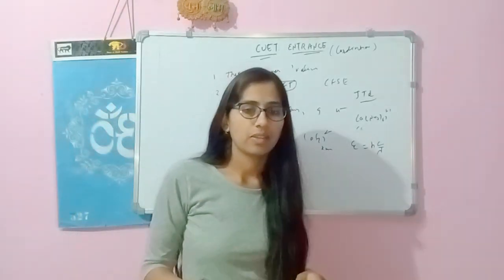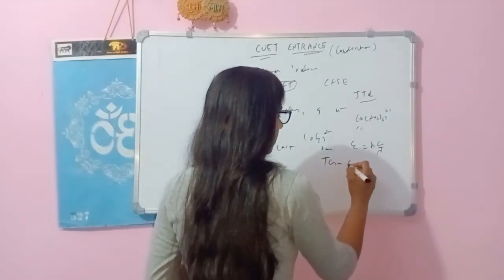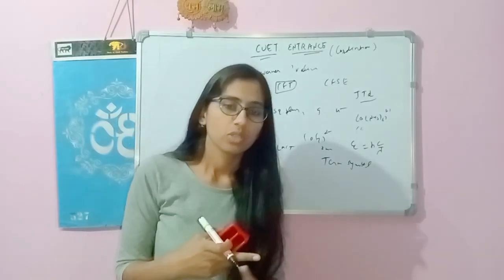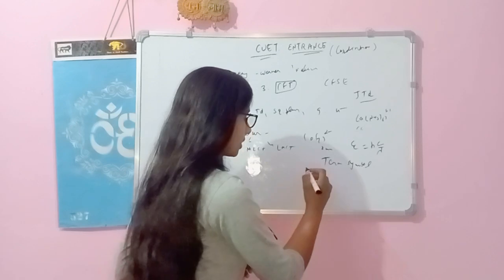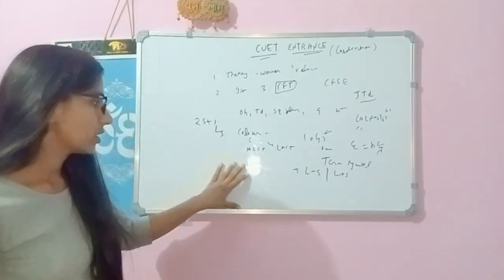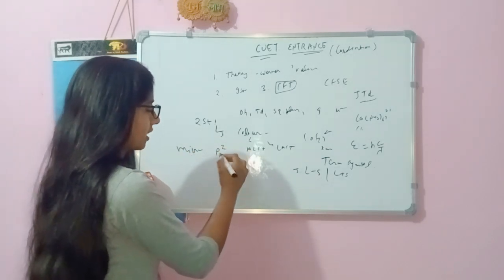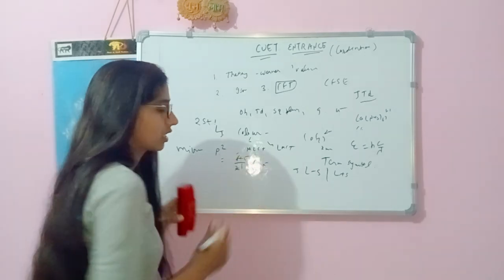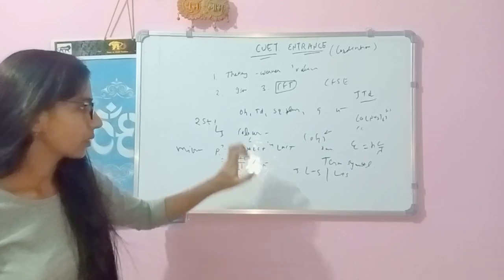In BSC, you studied Russell-Saunders coupling. Term symbols are super important — the general formula is 2S+1 L J. You may be asked to calculate the term symbol, the number of microstates (for example for p2, d2 configurations), transitions related to color, energy splitting, and increasing or decreasing order questions based on term symbols.